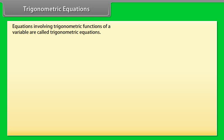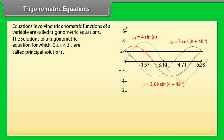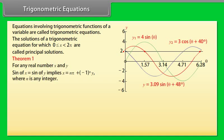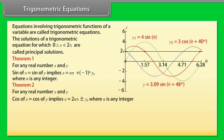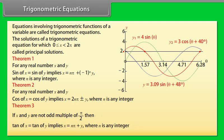Trigonometric equations: Equations involving trigonometric functions of a variable are called trigonometric equations. The solutions for which 0 ≤ x < 2π are called principal solutions. Theorem 1: sin x = sin y implies x = nπ ± (−1)ⁿy, where n is any integer. Theorem 2: cos x = cos y implies x = 2nπ ± y, where n is any integer. Theorem 3: If x and y are not odd multiples of π/2, then tan x = tan y implies x = nπ + y, where n is any integer.